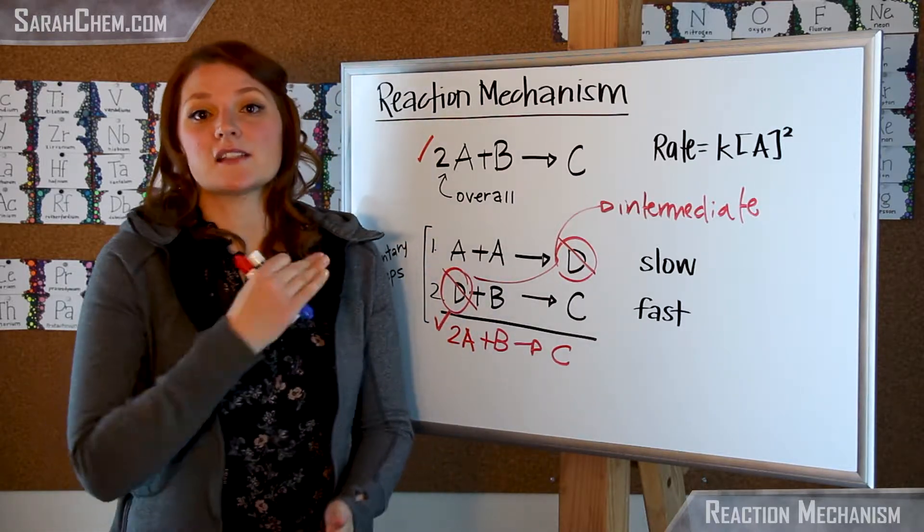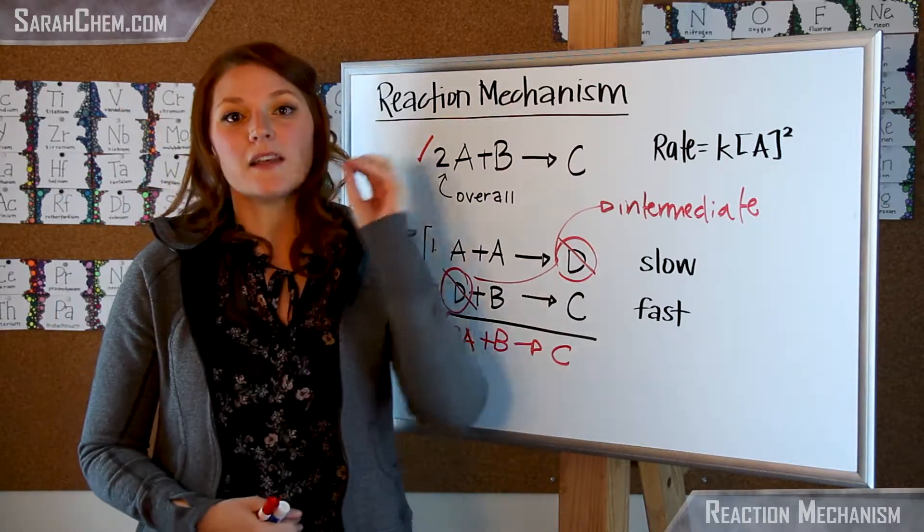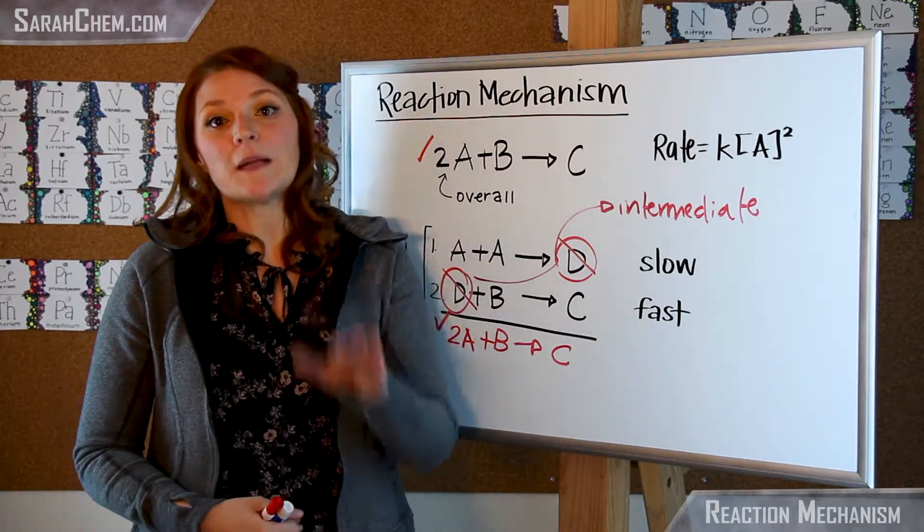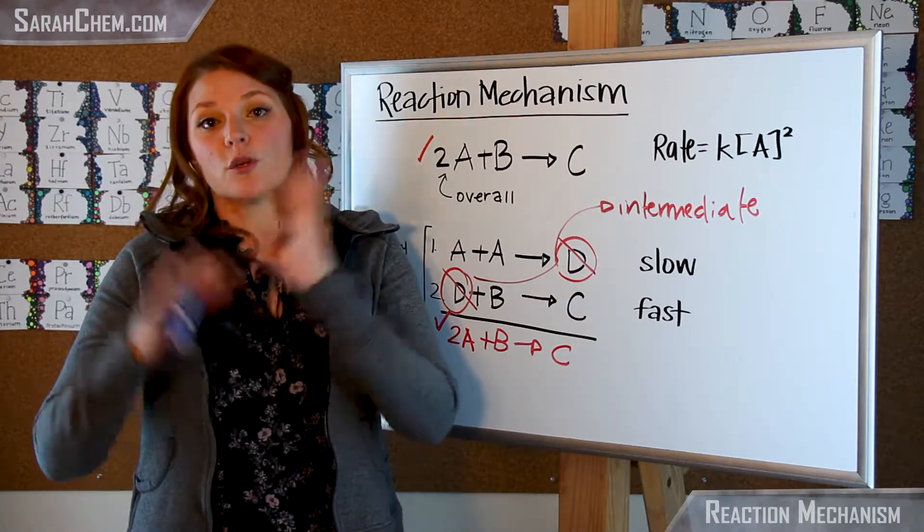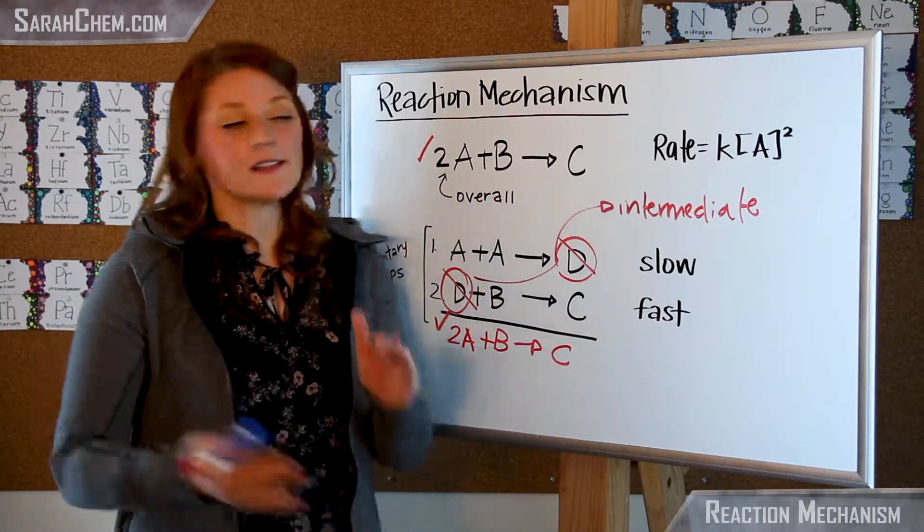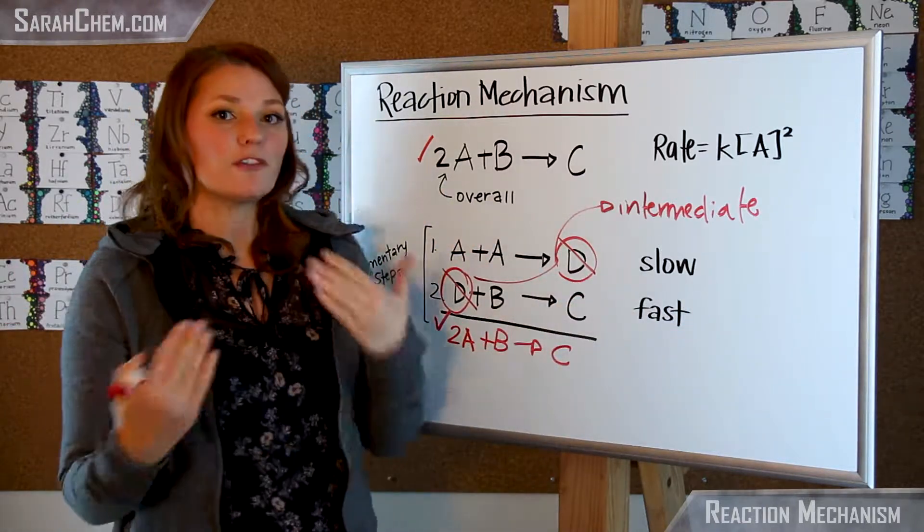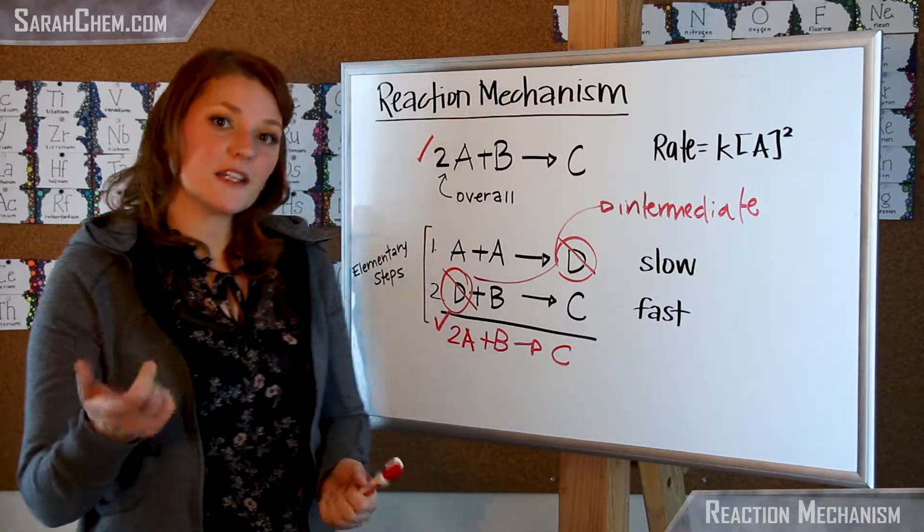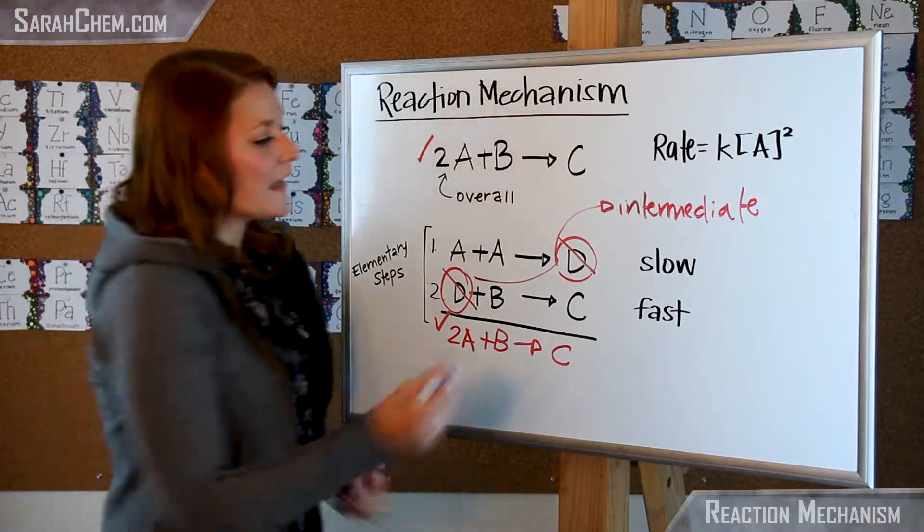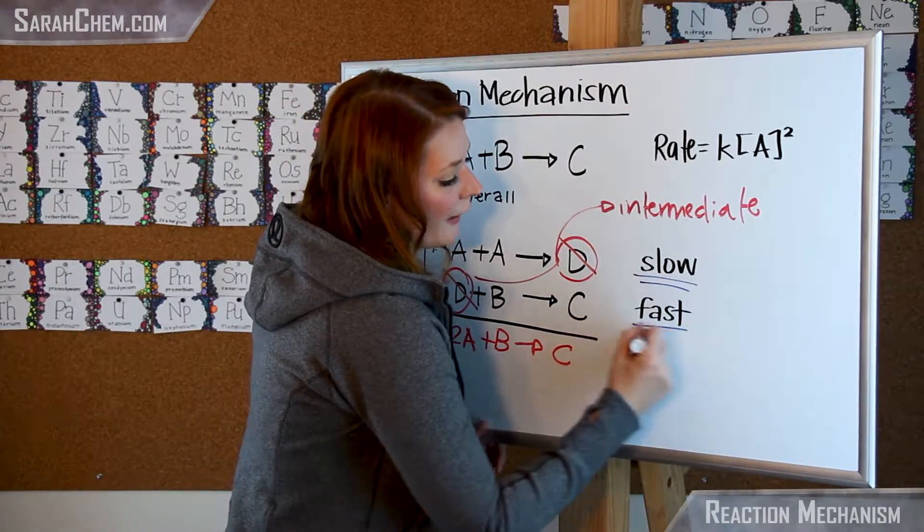The next thing is that the rate law of my reaction mechanism has to be equivalent to the experimentally determined rate law. So you do an experiment to figure out what a rate law is and the mechanism that I put forth has to have a matching rate law. Now what's going to be important when you're talking about that is these words here, slow and fast.